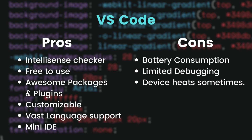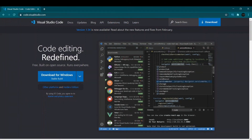The cons of VS Code: battery consumption is high. Debugging tools are great but limited. Sometimes — not always — the device heats up while using VS Code. And even though it provides many language supports, a few languages are still not supported. If you want to download VS Code, you can click the i button to download it.